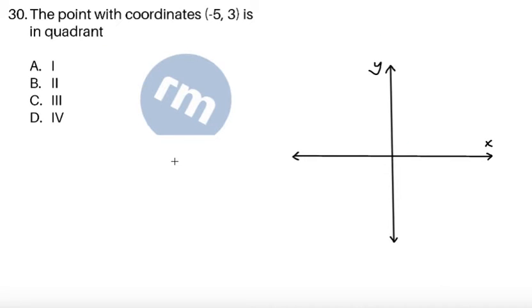For item 30, the point with coordinates negative 5, 3 is in quadrant 1, 2, 3, or 4. Now recall that in the Cartesian plane, along the x-axis, going to the right is positive, going to the left is negative.